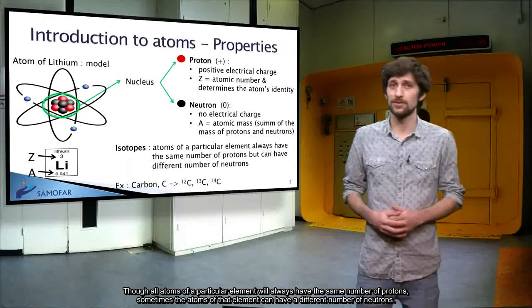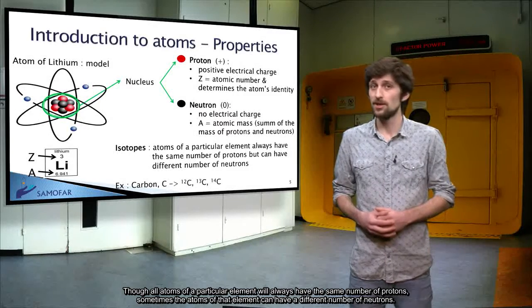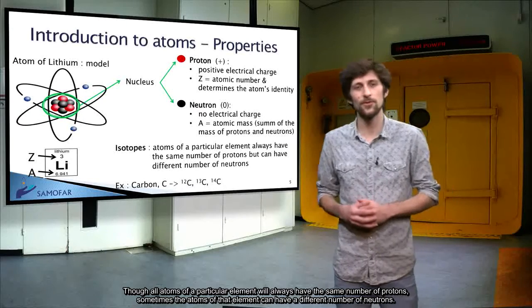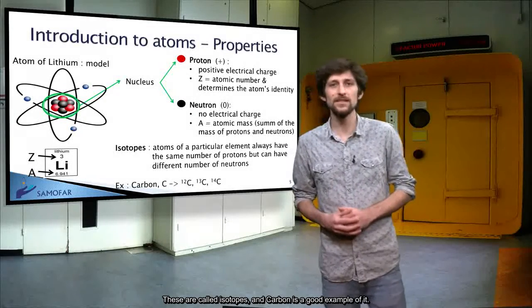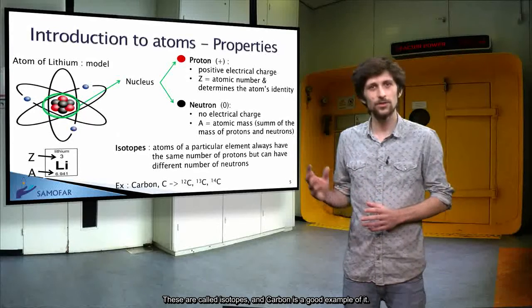Though all atoms of a particular element will always have the same number of protons, sometimes the atoms of that element can have a different number of neutrons. These are called isotopes, and carbon is a good example of it.